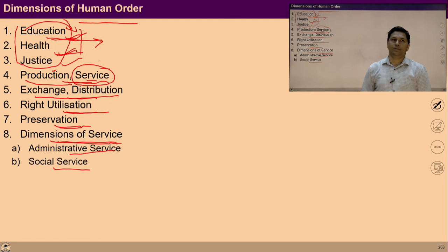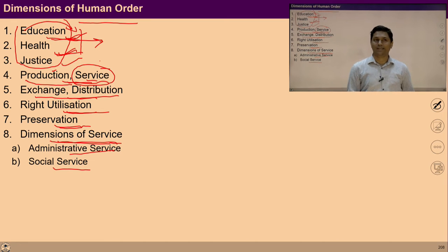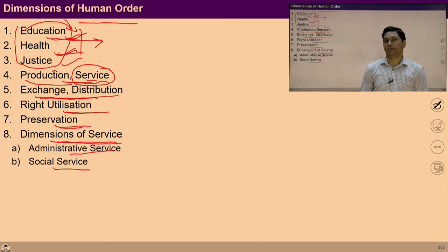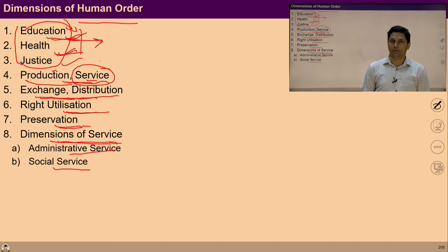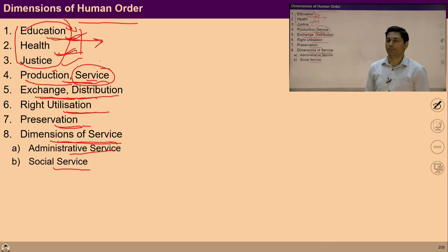Let's talk about exchange and distribution. We do not produce every item that we use, nor can we perform every kind of service that we need. We can produce only some items; all other items are produced by others. Through exchange, all such items and services are made available to us as per our needs. Many things are required to run a life, and all those things we cannot produce at the individual level — production can be done at the level of family or society. So the dimension of exchange plays a very important role in ensuring human order.